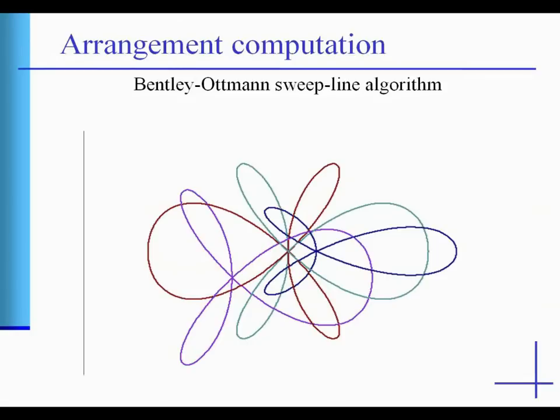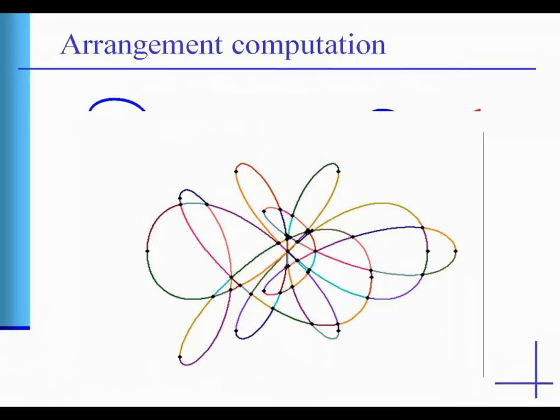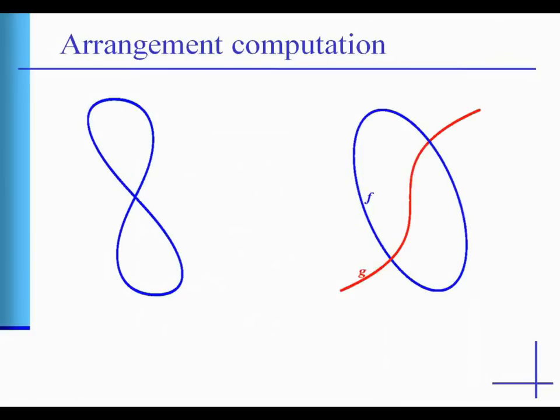To compute algebraic arrangements, we apply the Bentley-Ottmann sweep line algorithm to the case of arbitrary algebraic plane curves. All geometric predicates are reduced to a geometric topological analysis of a single curve and of a pair of curves.